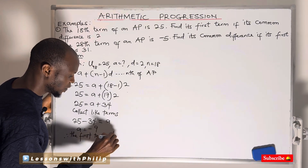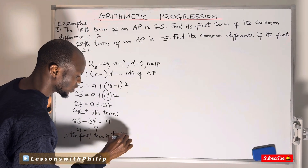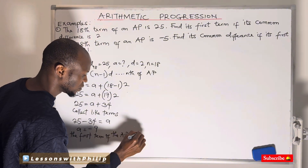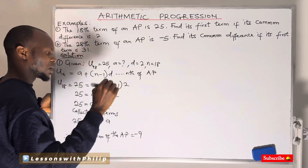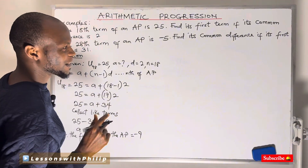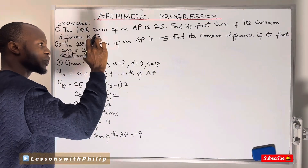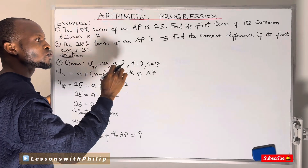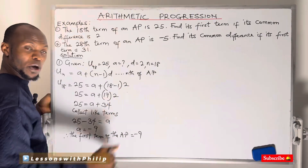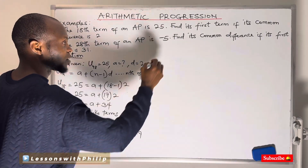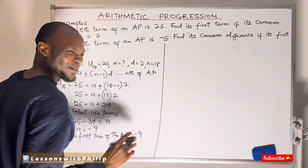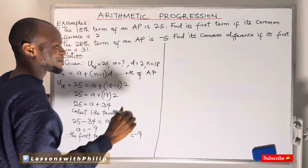Therefore the first term of the arithmetic progression is −9. The only thing you need to do is to know what you are given from your question. You see, that is very simple.